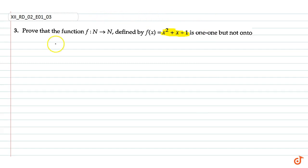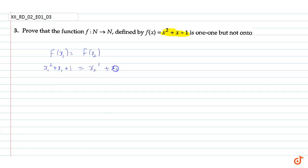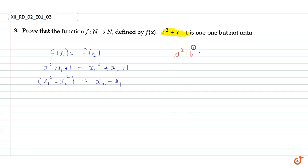To prove one-one, let us assume that f(x₁) = f(x₂). This gives x₁² + x₁ + 1 = x₂² + x₂ + 1, which simplifies to x₁² - x₂² = x₂ - x₁. Using the identity a² - b² = (a - b)(a + b), we factor the left side.